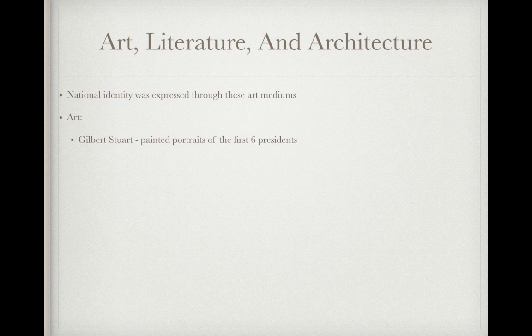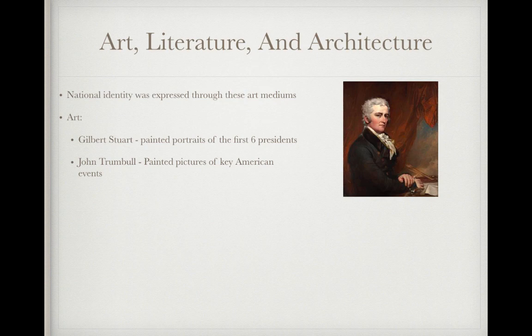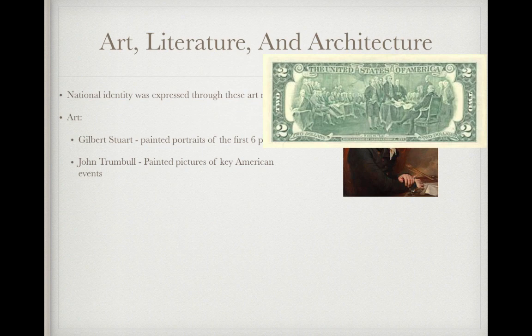Beginning with art, we have Gilbert Stuart who painted portraits of the first six presidents. So pretty much any portrait of the first six presidents that you saw were created by this guy. John Trumbull was another famous painter and he painted pictures of key American events that really helped inspire nationalism and pride in the United States. One of his pictures is on the back of the $2 bill — it's the signing of the Declaration of Independence.